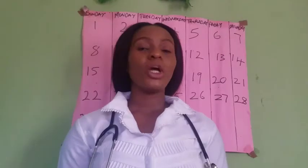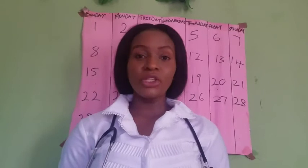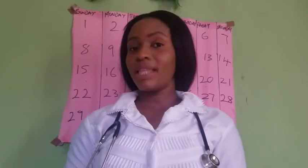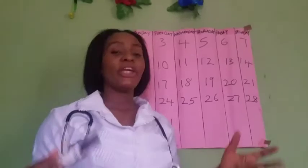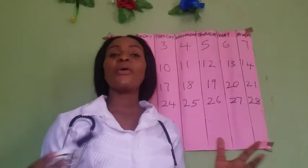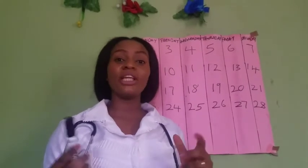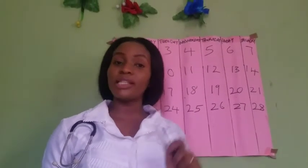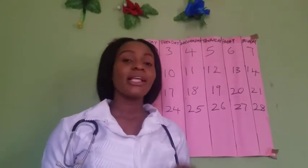An irregular menstrual cycle is defined as a cycle that is either shorter than 21 days or longer than 36 days. Your cycle may also be called irregular if it significantly varies from month to month — for example, if this month your cycle is 24 days and next month it becomes 30 days, it is also considered irregular.